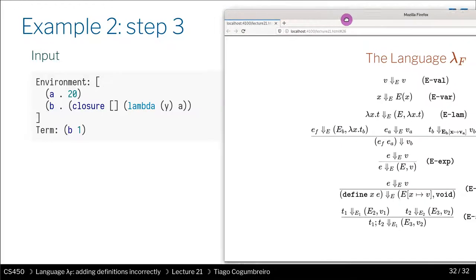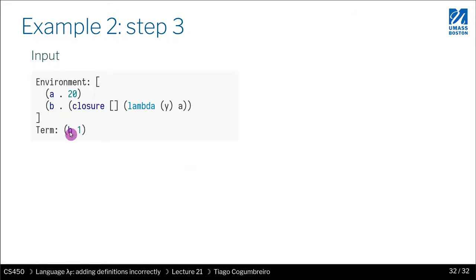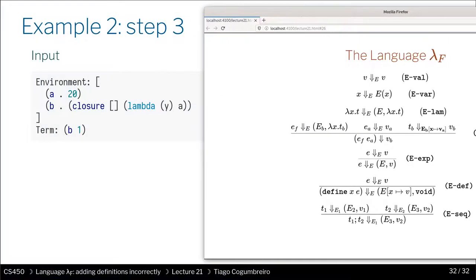So if you recall the rule for function evaluation, function application, which is the same for lambda E. You see that we evaluate E of F. What is E of F? It's going to be this B, right? E of F is going to be the function, the variable B. We have to look up, so we're going to get this closure. So the closure that we have here is going to be E of B is going to be the empty environment, right? And the lambda is going to be this lambda. So then we evaluate the argument, which is one. So one is going to return one here, right? Because it's a value.